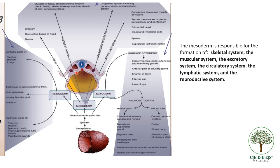Each of these regions develops into different organs, because the mesoderm is responsible for the formation of skeletal, muscular, excretory, circulatory, lymphatic and reproductive systems. So they are developing from different parts of this mesoderm.